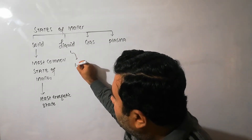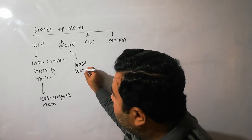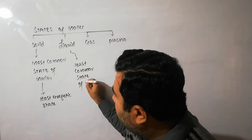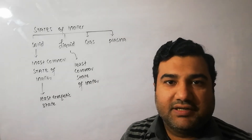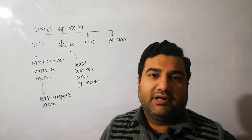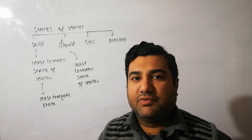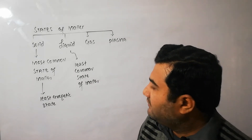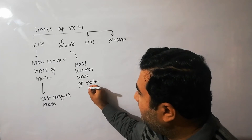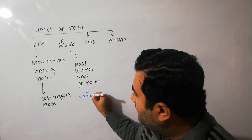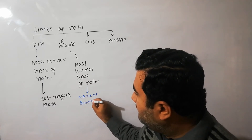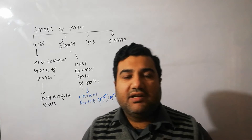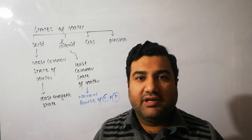Liquid state is the least common state of matter. There are very few species that exist in the liquid state. For example, only two elements in the periodic table are in liquid form: one is a non-metal, that is bromine, and the other is the metal mercury. Liquid is the least common state of matter because its existence is in a very narrow range of temperature and pressure — a slight change in temperature and pressure may convert it to the solid or gaseous form.